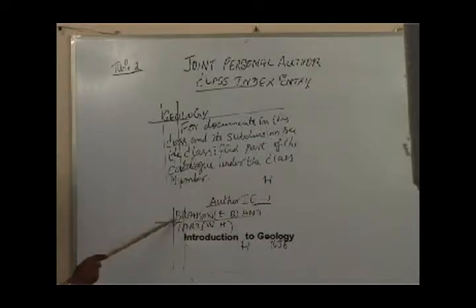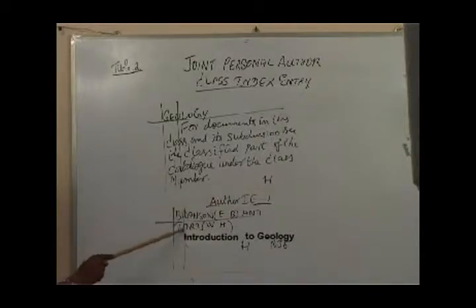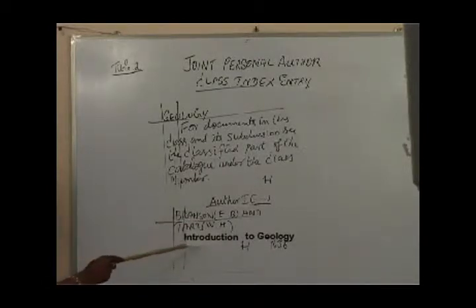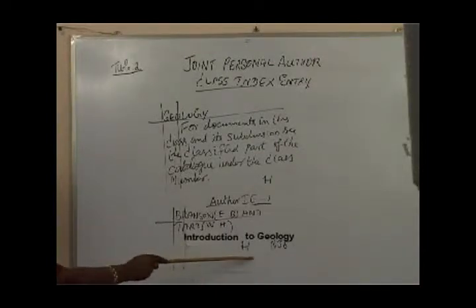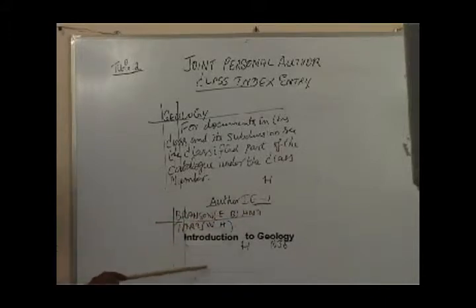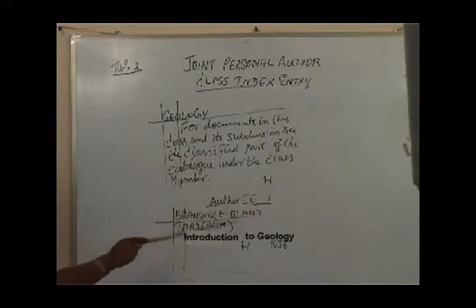Then comes author index entry number one, copied down from the tracing section starting from the first vertical, with continuation also going to the first vertical. In the leading section we copy down the author's name, in the second section we copy the title of the document, and in the third section we give the index number — that is the call number. H is the class number and N35 is the book number.